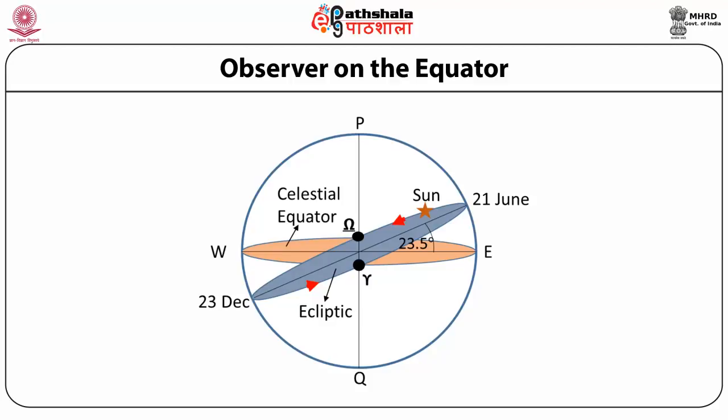Between 21st March and 23rd September, the Sun's declination is between 0° and 23.5° north. For these six months, the Sun is circumpolar for latitudes greater than 66.5°. For observers in these locations, the Sun never sets — it is visible even at midnight. During the remaining six months, the Sun never rises for these observers. For observers in the southern polar region, the Sun remains above the horizon for six months from 23rd September to 21st March, when its declination is between 0° and 23.5° south. For them, the Sun sets for the six months from 21st March to 23rd September.